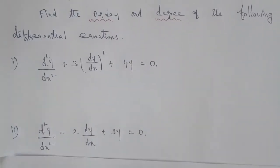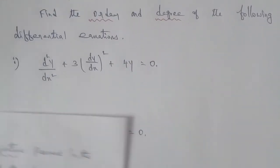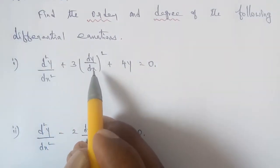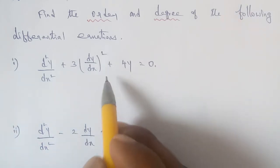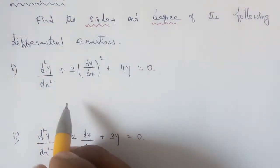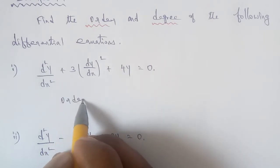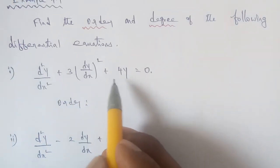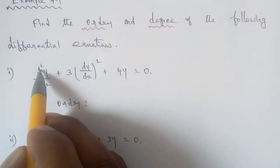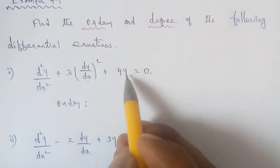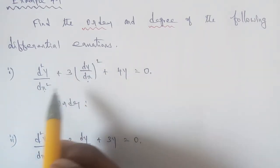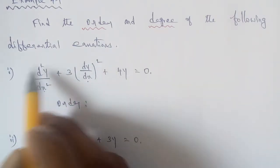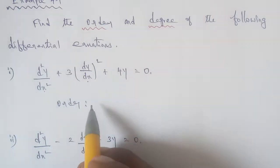Sub-question 1: d²y/dx² + 3·(dy/dx)² + 4y = 0. In this equation, the derivatives present are d²y/dx², dy/dx, and y. The highest order derivative is d²y/dx², which is the second order derivative.